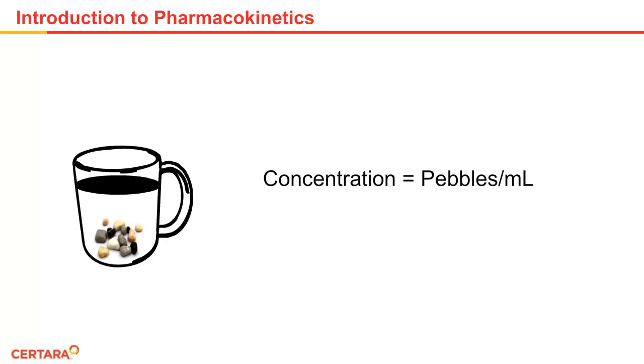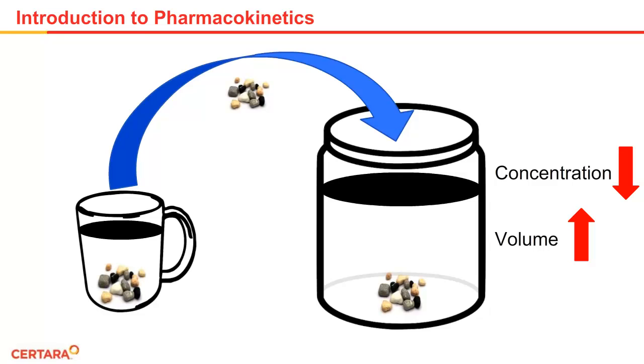This concept is better explained if you imagine a cup with pebbles inside. The concentration is pebbles per milliliter or ounce of liquid. If you take that cup and pour the pebbles into a much larger container, you would have fewer pebbles per milliliter of water, because there is more water, and thus the volume has increased.